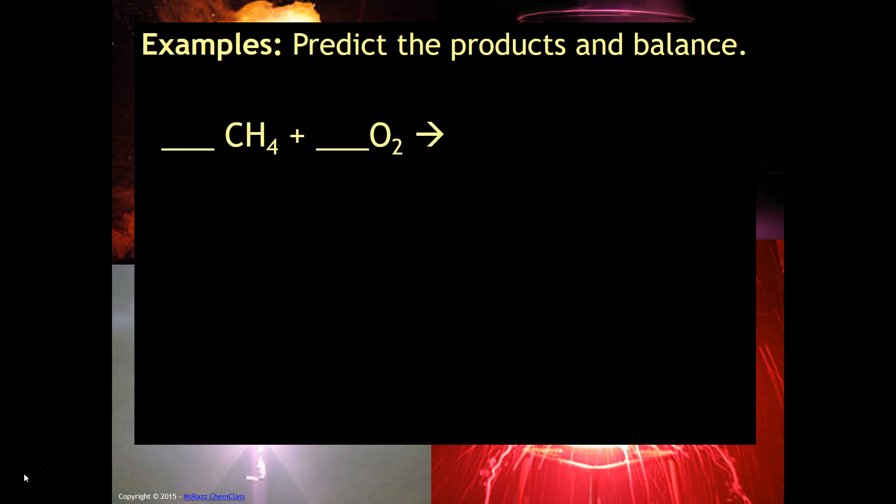So I ask you to predict the products and balance. So notice that we've got methane which is comprised of carbon and hydrogen. We know that this is a combustion reaction because it contains oxygen. That's a clear indicator that it's a combustion reaction. So what we're going to do is since we see that we have carbon we're going to get CO2 and since we have hydrogen we're going to get water H2O. So you just write them down as is. We then have to balance the equation.